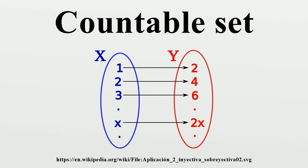This is where the concept of a bijection comes in. Define the correspondence: 1 ↔ a, 2 ↔ b, 3 ↔ c. Since every element of {a, b, c} is paired with precisely one element of {1, 2, 3}, and vice versa, this defines a bijection. We now generalize this situation and define two sets as being of the same size if there is a bijection between them. For all finite sets this gives us the usual definition of the same size.